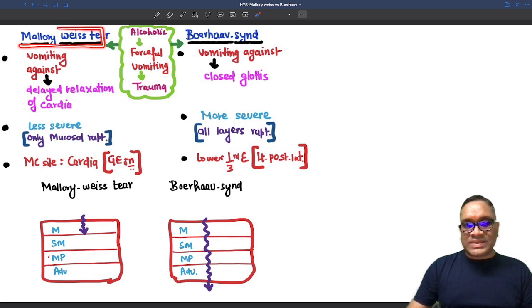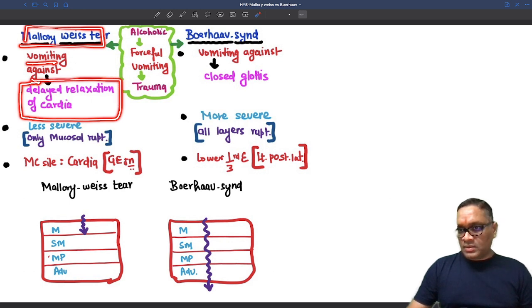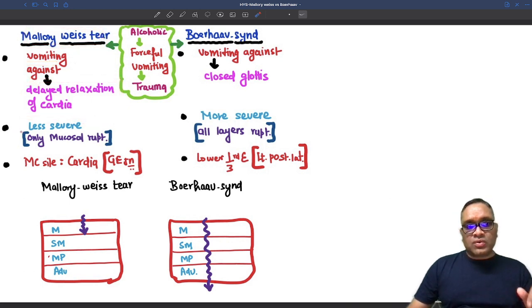So what happens in Mallory-Weiss? Mallory-Weiss is vomiting against the delayed relaxation of the cardia. And in this patient, you will find a less severe type of trauma where you will see only mucosal rupture. See the name: Mallory - Mucosal Rupture Only, mnemonic.